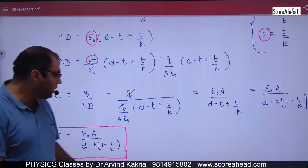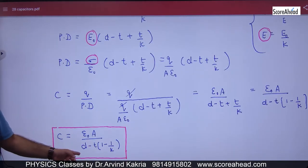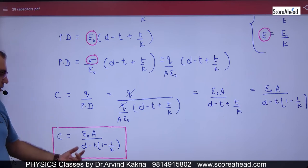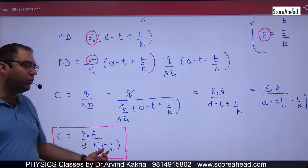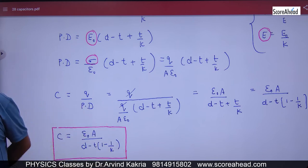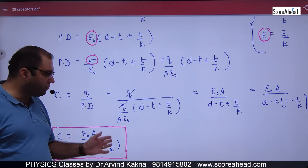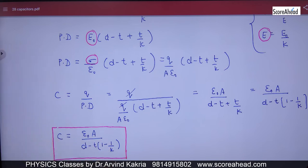So this is the formula. If the dielectric slab is put in it, which has thickness T, then the capacitance is Epsilon0 A divided by D minus T into 1 minus 1 by K. Is this step clear? This formula is important. The derivation is also important. We have to remember the formula.